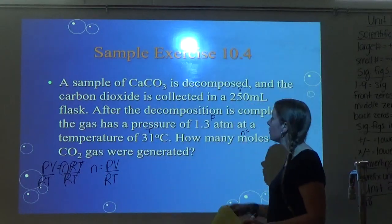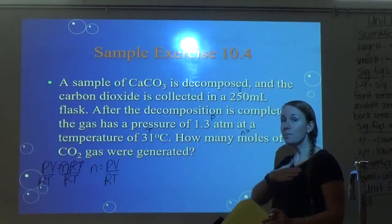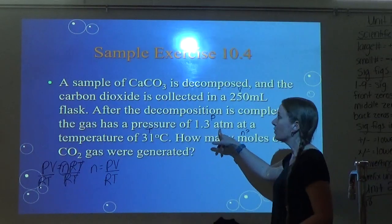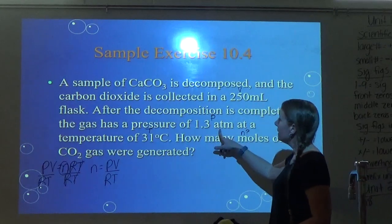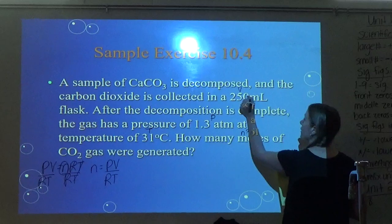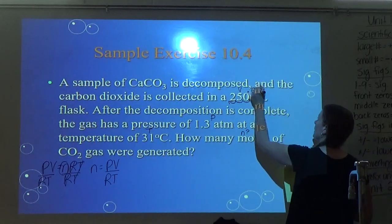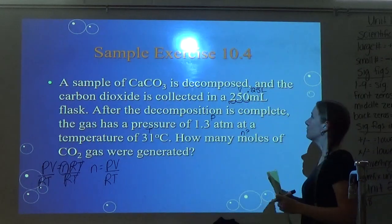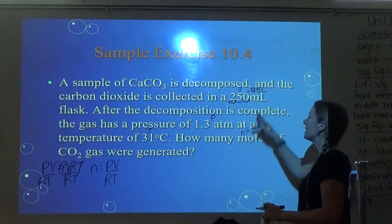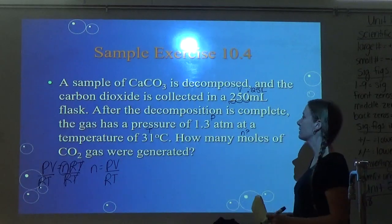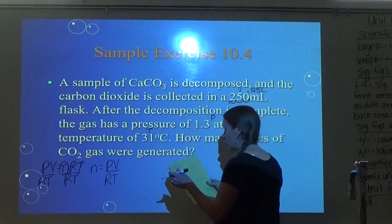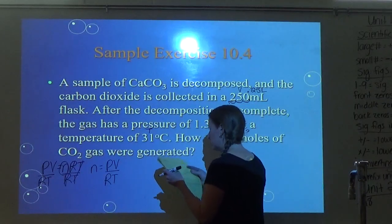Since I'm solving for N, I rearrange to get N equals PV over RT. I need to check my units. Pressure is in atm, so I'll use R = 0.0821. Volume is in milliliters — that's not okay, I need liters. Move the decimal three places to the left — divide by 1,000. For temperature, I add 273, so 31°C becomes 304 Kelvin.